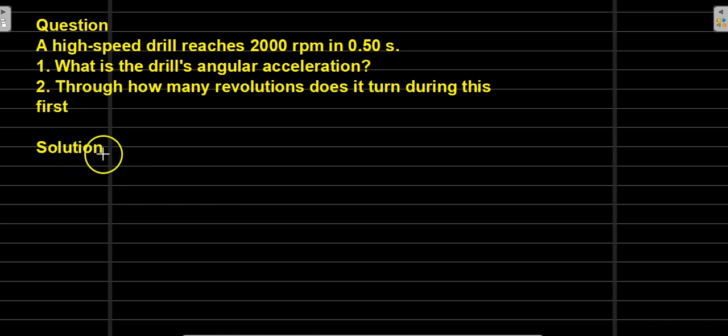Now, the solution to this question, we will first extract the data. It says 2000 RPM in 0.50 seconds, which means that our omega initially is supposed to be 2000.